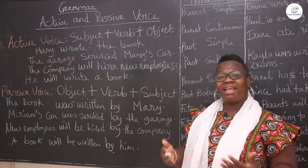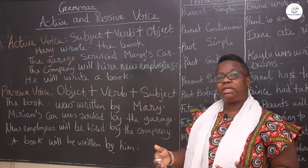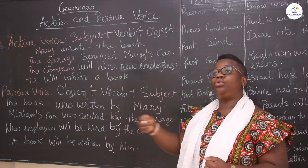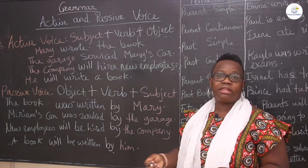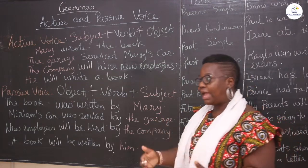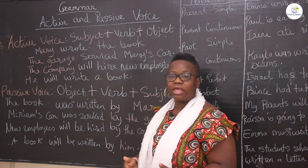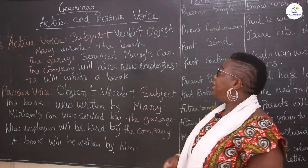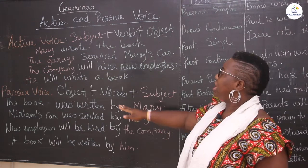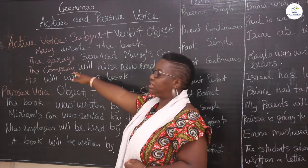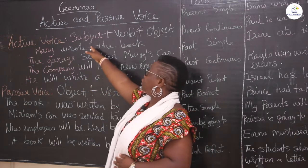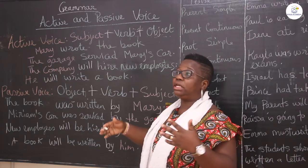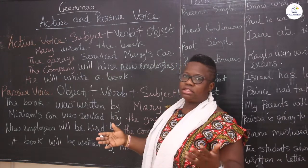Whereas passive voice is the opposite. It means that the action is being done by the subject through someone or through something. So active voice is the actual action — something being done directly by the subject. On the board, as you can see here, we're talking about the active voice. Active voice is the subject, which is me, which is Paul, which is Mary, which is Kayla, which is Irene — we — that's the subject.